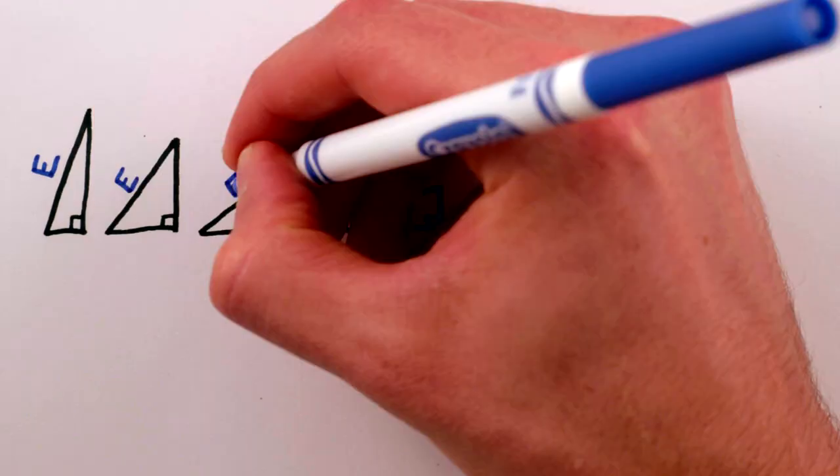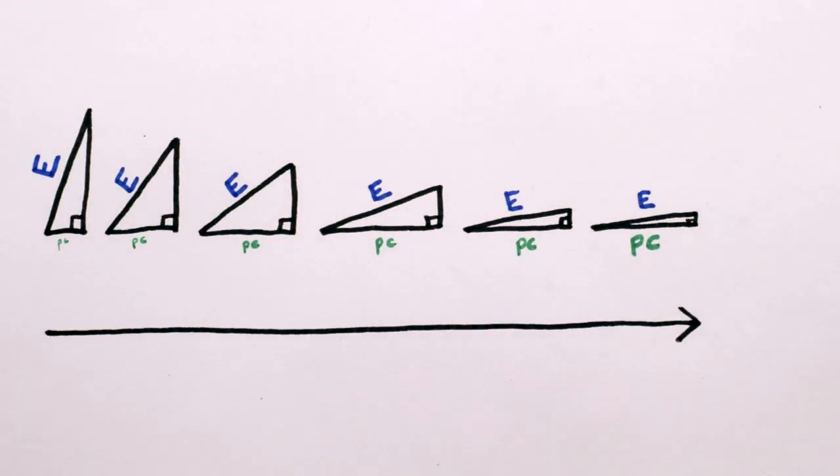In fact, the closer the energy of something is to p times c, the closer that something is to behaving like light. I mean, look here, this tiny little bit of mass is hardly mass at all.